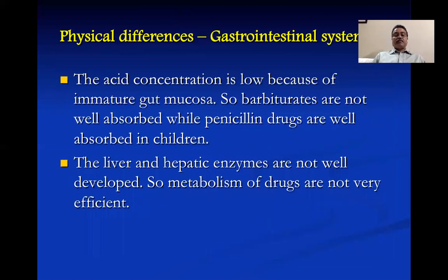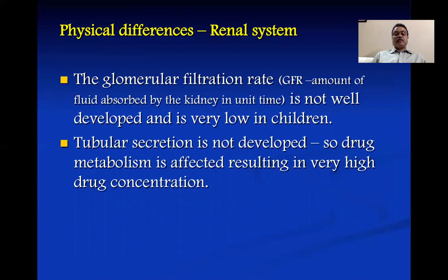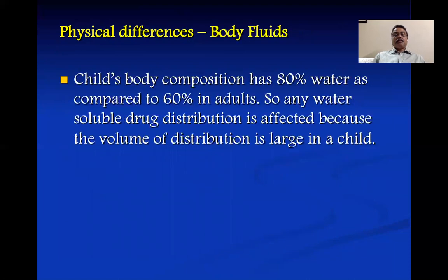Moving on to the gastrointestinal system: acid concentration is low because of the immature gut mucosa, so barbiturates are not well absorbed whereas penicillin is well absorbed in children. The liver and hepatic enzymes are not well developed, so drug metabolism is not efficient. In the renal system, the glomerular filtration rate (GFR) is very low and tubular secretion is not developed, resulting in very high drug concentrations. In addition, a child's body composition has 80% water compared to 60% in adults, and any water-soluble drug distribution is affected because the volume of distribution is large.